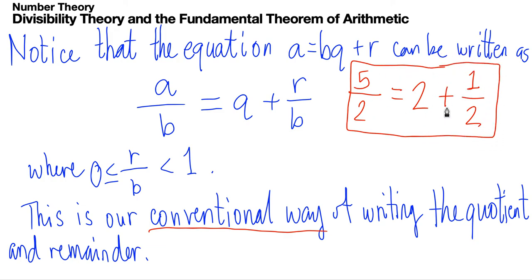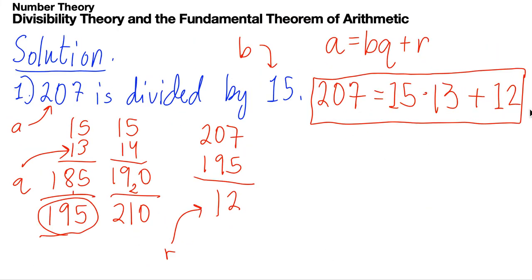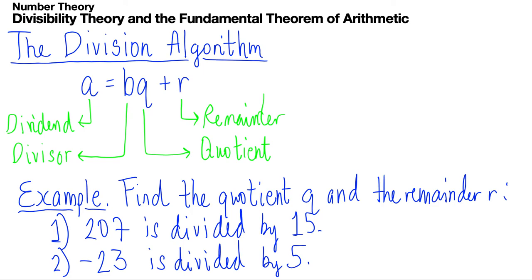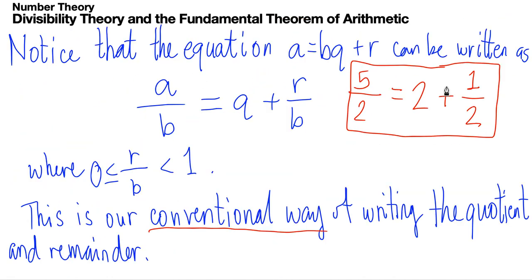What we do here in number theory is simply get rid of fractions — all answers are written as integers. In conventional arithmetic we accept fractions, but in number theory we are looking for integers rather than rational numbers. So the division algorithm keeps everything as integers: a, b, q, and r are all integers.